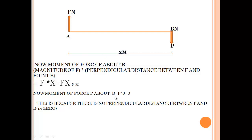Now, the moment of force P about point B. See the moment of force P about point B. P into 0. Because there is no perpendicular distance between point B and point of application of P. They both coincide. So, there is no moment of P about point B, it's zero.